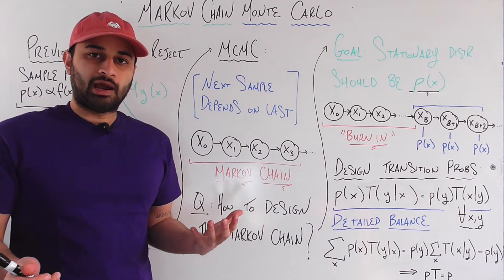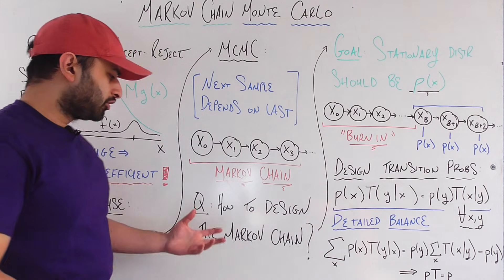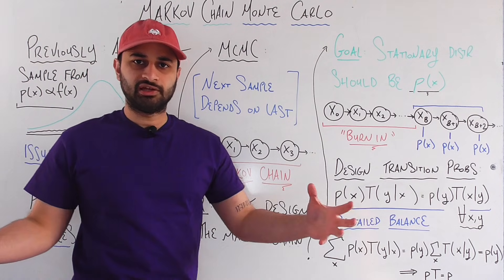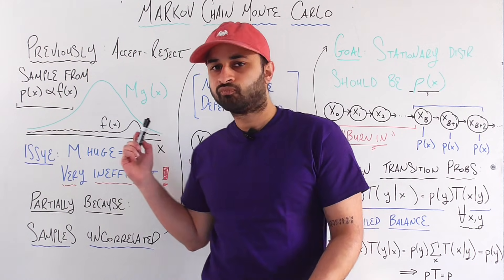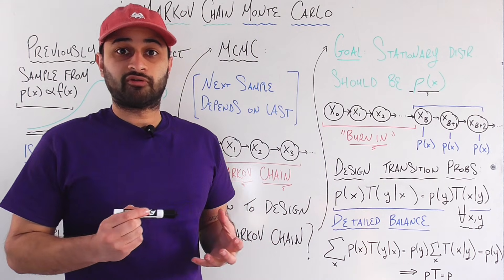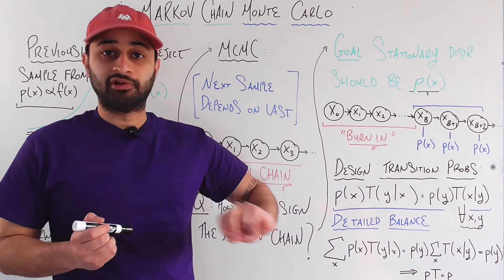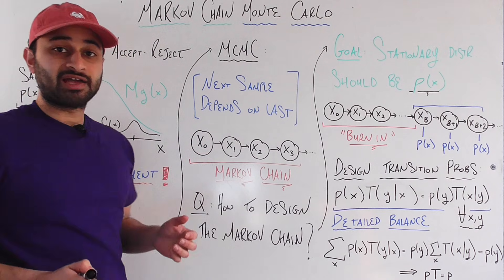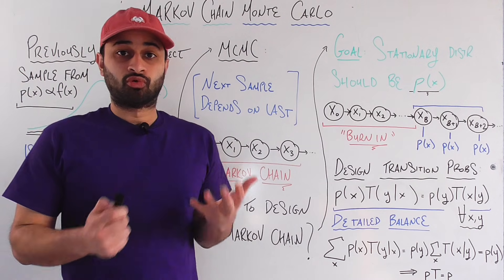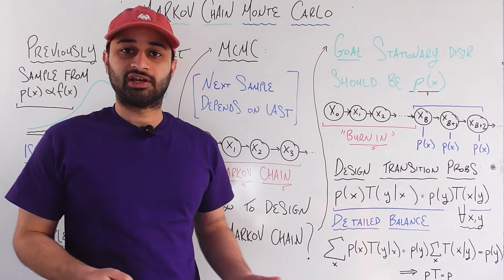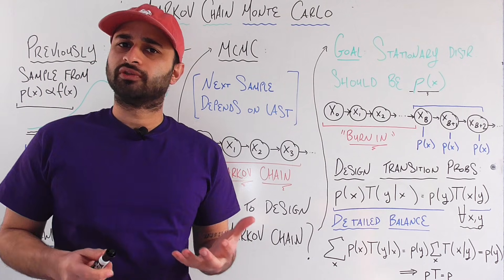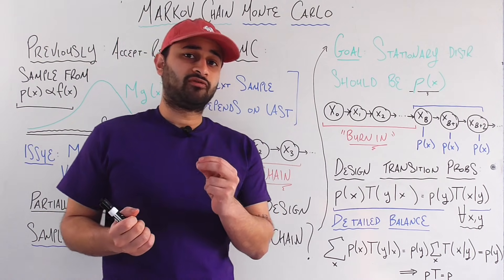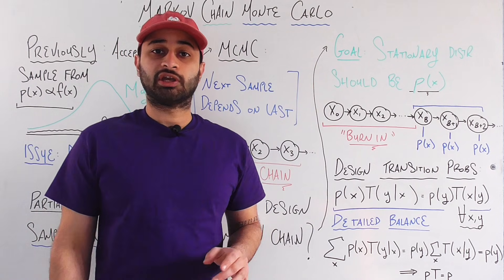Now the biggest burning question now I've explained it at a high level, but how do we design this Markov chain? It's not trivial because a Markov chain is a collection of states. We know the states can just be anything on this line here, but the other very important part of a Markov chain is the transition probabilities between states. How do we know given some state, given some last sample, how do we define some rule to get the next sample such that it's going to actually sample from the distribution that we want?